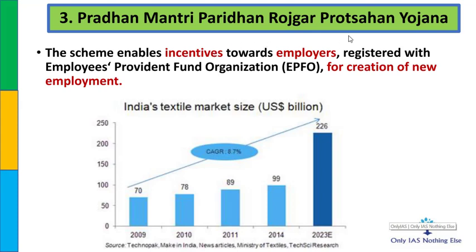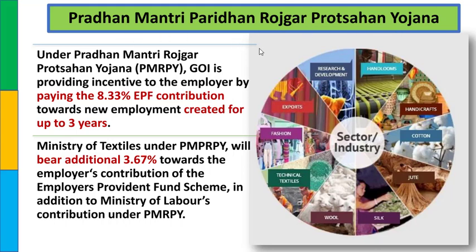तीसरा scheme है प्रधानमंत्री परिधान रोजगार प्रोत्साहन योजना. Paridhan मतलब apparel या drapery - उसमें रोजगार को बढ़ावा देना है, मतलब skill development करना है. जो employers बहुत सारे employment opportunities create करते हैं और EPFO के साथ registered होते हैं, उनको Ministry of Textile एक incentive देती है. Ministry of Labor 8.33% contribute करती है, और Ministry of Textile इस scheme में additional 3.67% का EPFO contribution देगी.